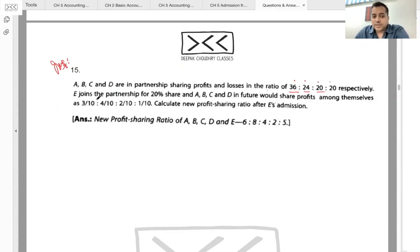E joins the partnership for 20 percent share, and A, B, C, D in future would share profits among themselves in the ratio 3:4:2:1.